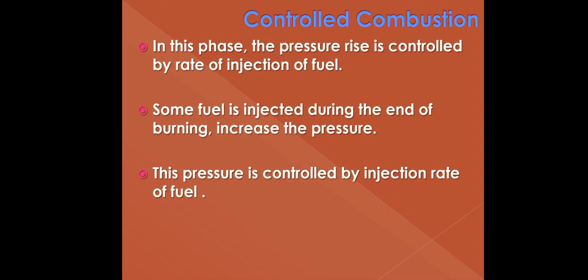In controlled combustion, the injected fuel burns directly because of the high temperature and pressure achieved in the second stage. In this phase, the pressure rise is controlled by the rate of fuel injection. Some fuel injected toward the end of burning increases the pressure, which is also controlled by the rate of injection.